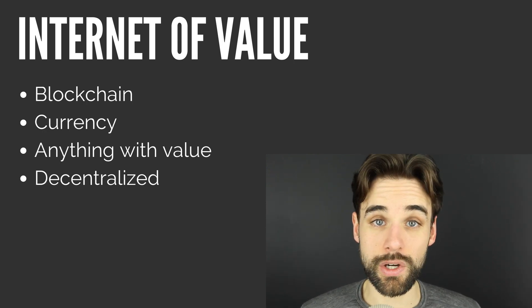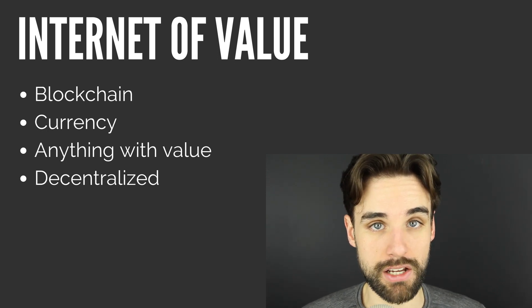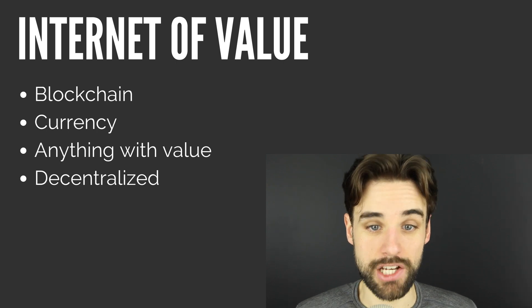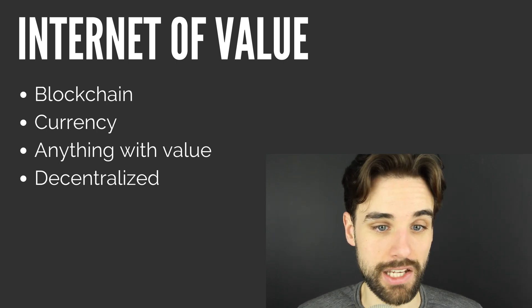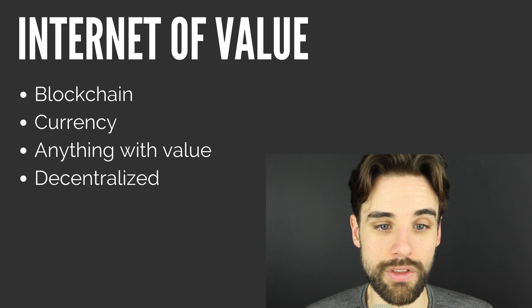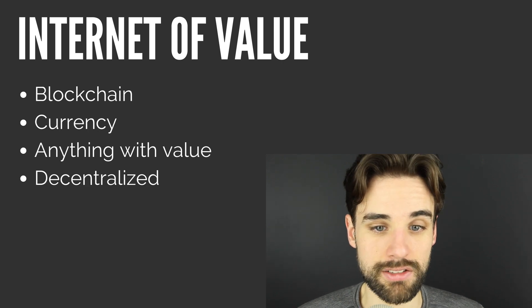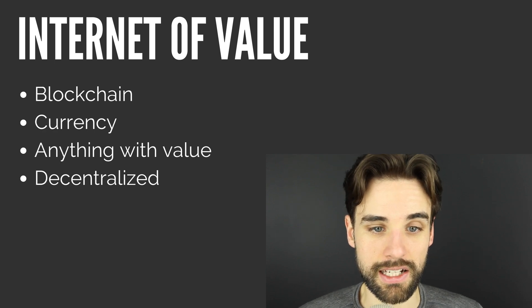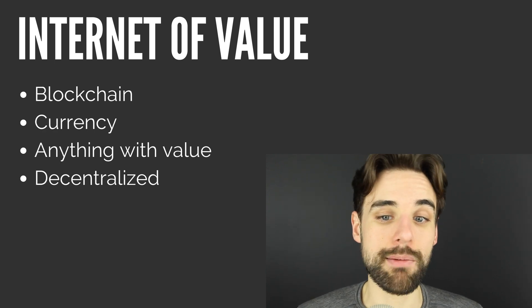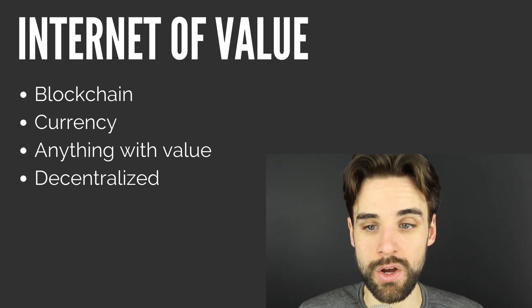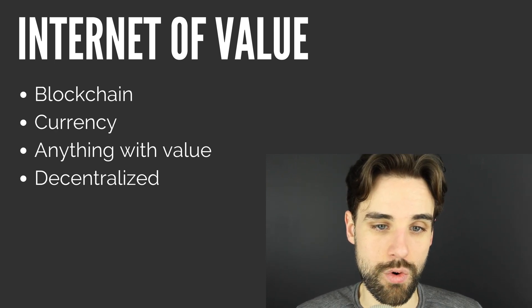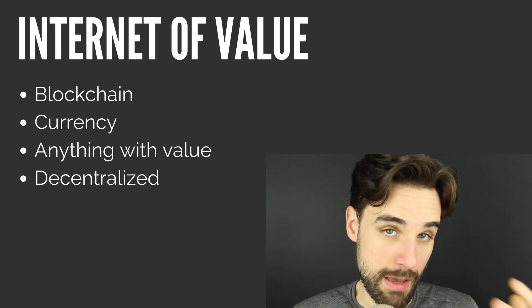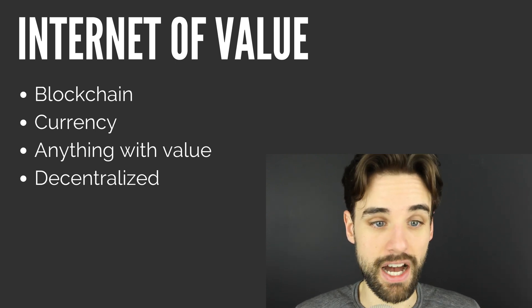Let's take a quick look at Bitcoin, the first major blockchain that deals with currency. Bitcoin allows us to know that each token we hold is unique and we can't duplicate it. We know that it belongs to us and that the total number of tokens can't change. It allows us to send tokens in a reliable way from one person to another without fear of hacking or those properties changing. That's how Bitcoin implements an internet of value.